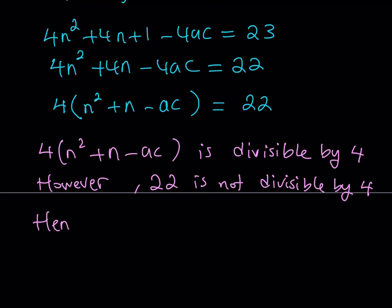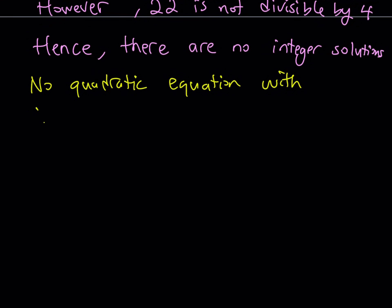It means that, hence, we can write it in mathematical words. There are no integer solutions. Why? Because you got an equation where the left-hand side is divisible by 4, but the right-hand side is not divisible by 4, and this is impossible. Therefore, we have no quadratic equation with integer coefficients having 23 as its discriminant, which is delta.